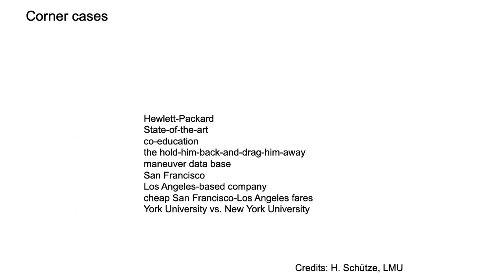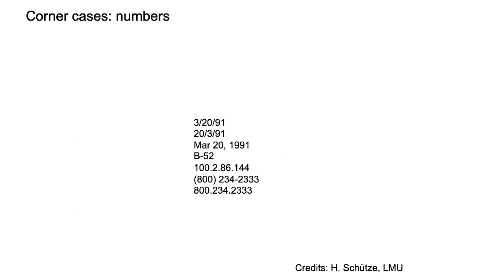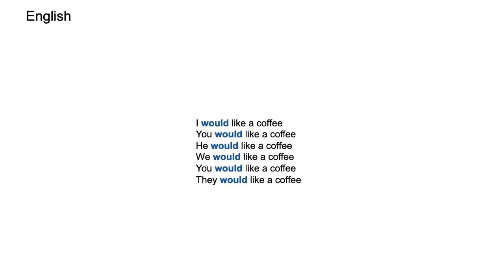Then there are numbers: dates, phone numbers, IP addresses. Every country has a different format for phone numbers — in the US you put the area code in parentheses, in Switzerland it's groups of three-three-two-two, in France it's pairs. Slashes, parentheses, dots, and dashes may or may not appear. These are all corner cases that make tokenization very complex.